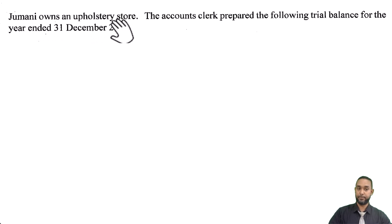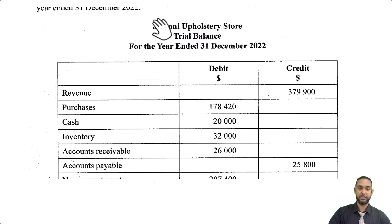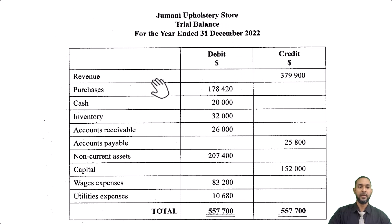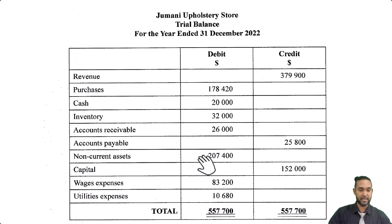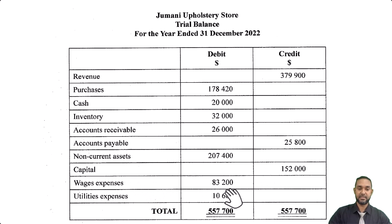So it says Jumani owns an upholstery store. The accounts clerk prepared the following trial balance for the year ended 31st December 2022. It's headed up properly. We have revenue on the credit side — that's where it's supposed to be. Purchases, cash, inventory, receivables all on the debit side — correct. Accounts payable on the credit side, non-current assets on the debit side, capital on the credit side, and two expense items on the debit side. The trial balance seems to balance.